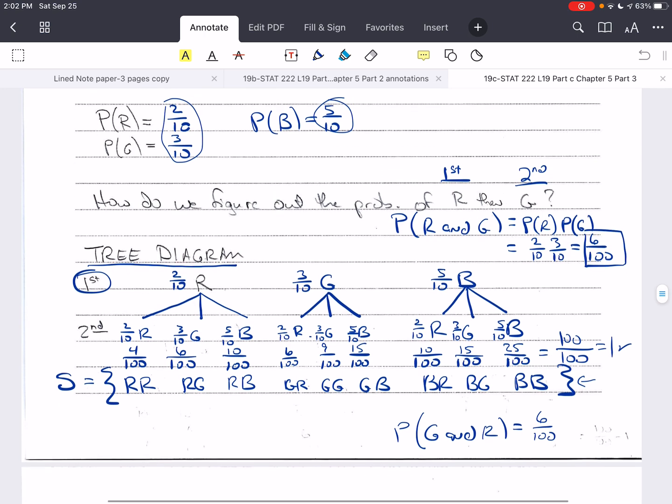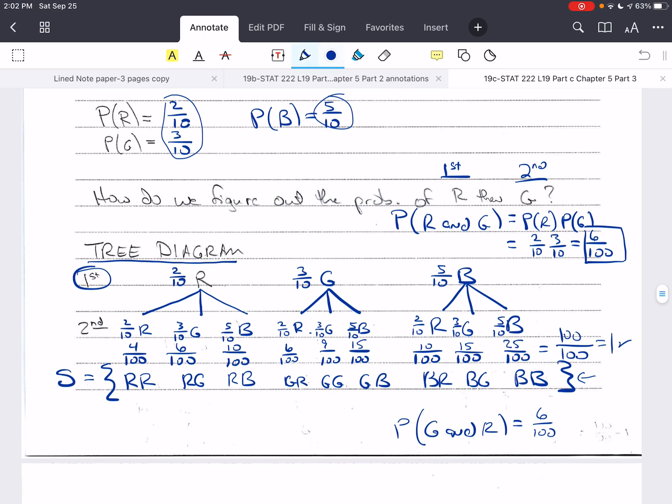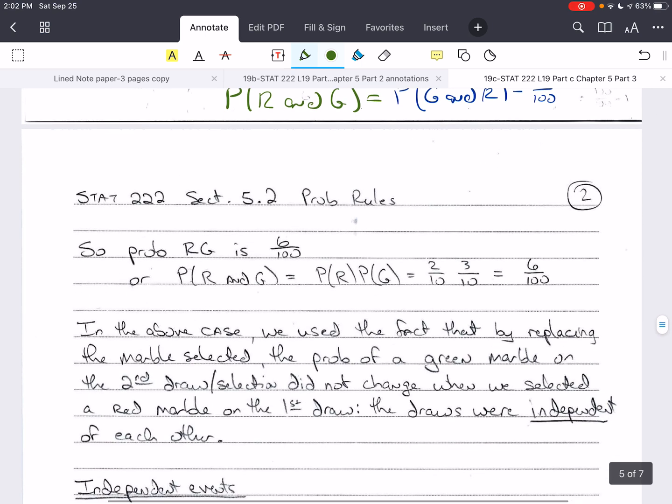We learned in the last video that the probability of R and G is equal to the probability of G and R, at least in this case where we have independent events, or constant probabilities, or we're sampling with replacement. We used the fact that by replacing the marble that was selected, the probability of a green marble on the second selection did not change when we selected a red marble on the first selection or draw.